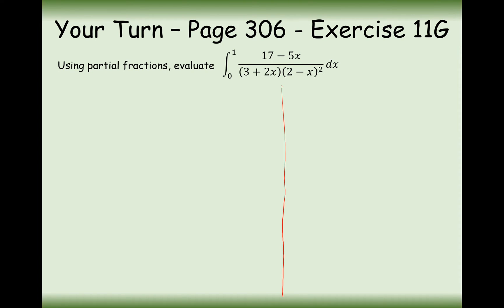When you have something like (3 plus 2x) and a (2 minus x) squared on the bottom, when you create your partial fractions you're going to have one part with (3 plus 2x) on the bottom. But you're going to need two parts for the squared term on the bottom — one with a quadratic term and one with a linear term.